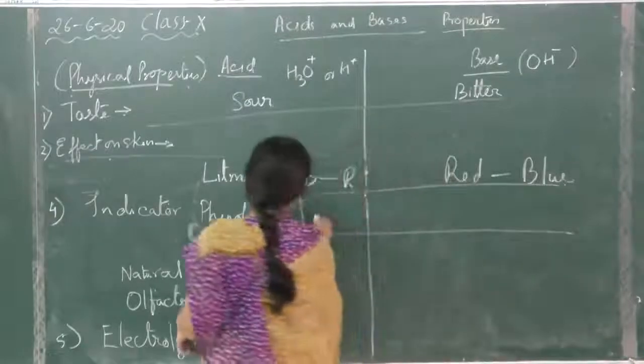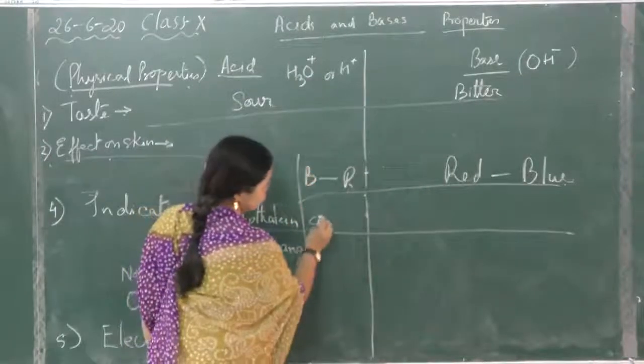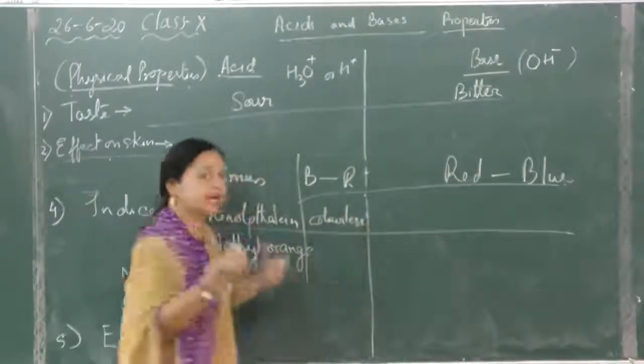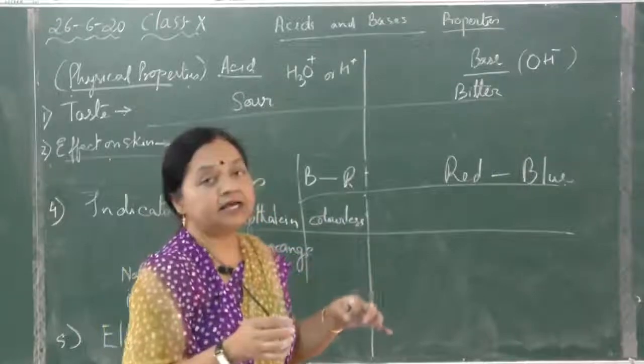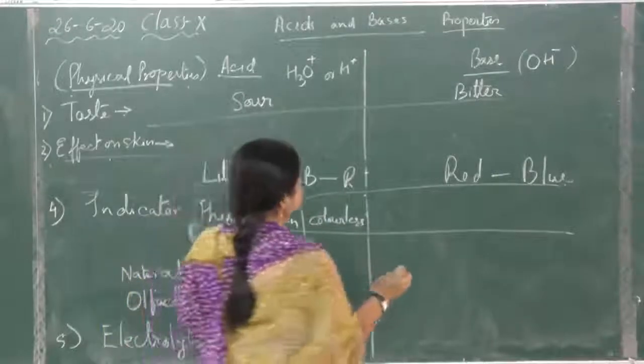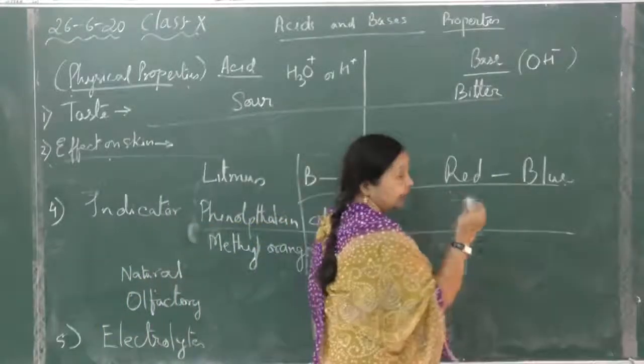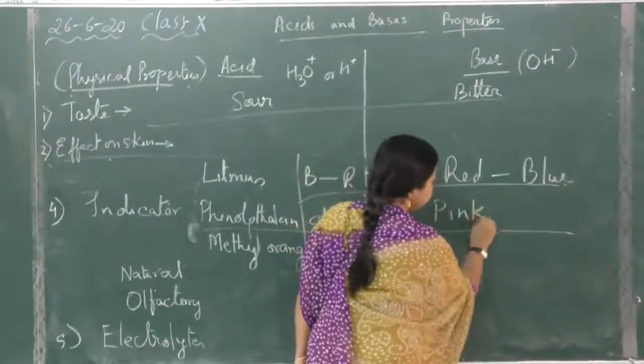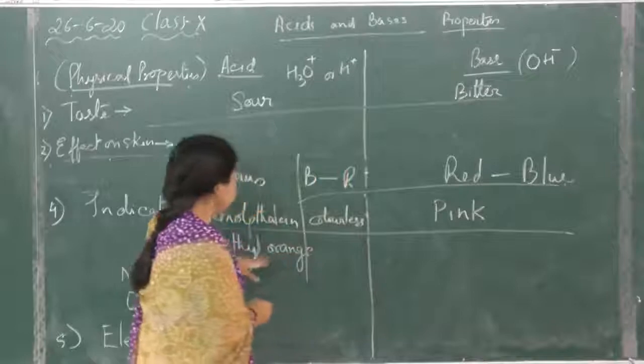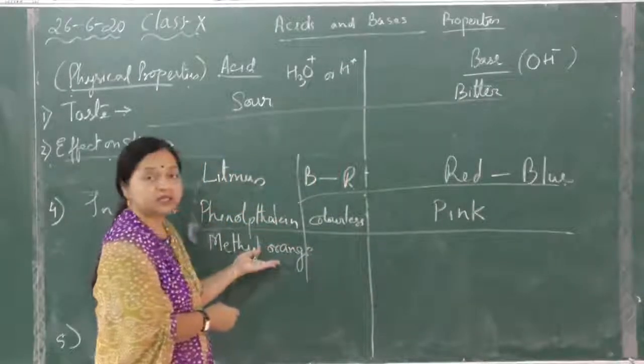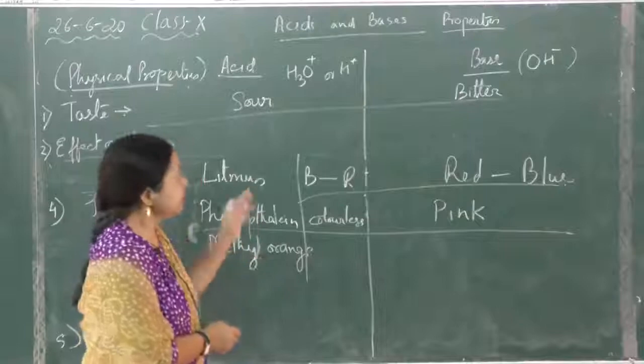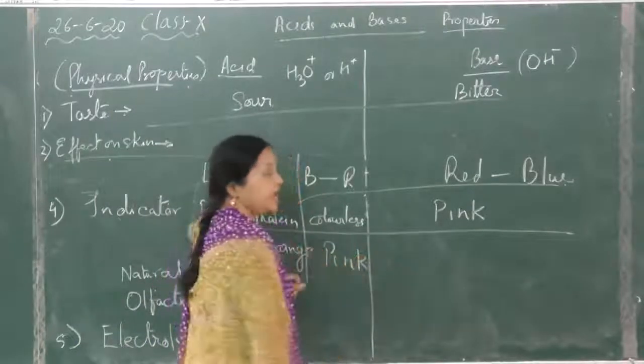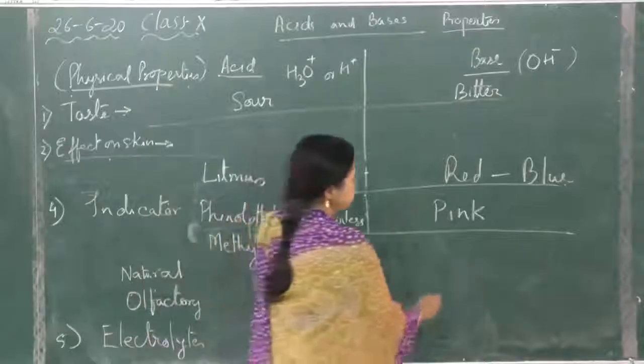Phenolphthalein is colorless in acids. It's itself colorless and if you drop it in an acid it remains colorless. But in a base, in alkali, it will be pink, it's pink in color in alkali. Methyl orange, as the name suggests, is orange in color originally, but in acid it turns pink and in an alkali it will turn yellow.